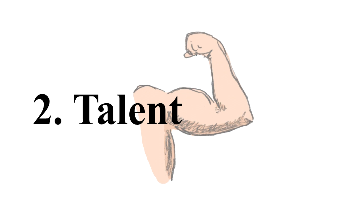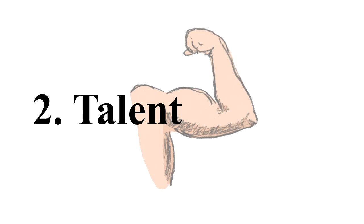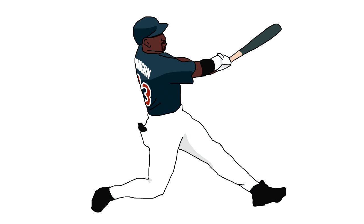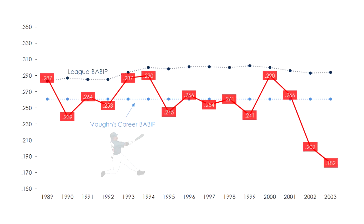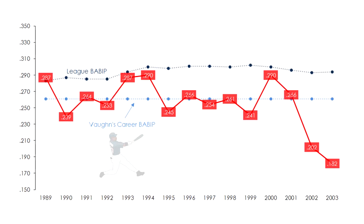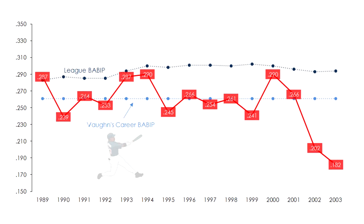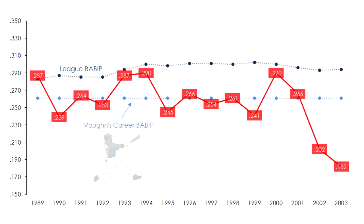The second factor, talent, can be different from player to player. Consider Mr. Greg Vaughn. Though his BABIP sat in the 200s, he was still a highly productive hitter, and since the majority of his production came from home runs and walks, a high BABIP would be an aberration for him.